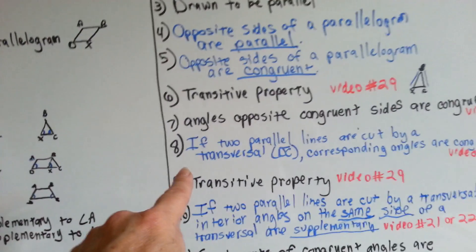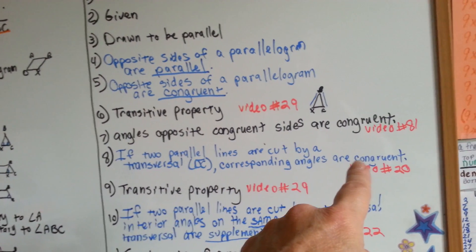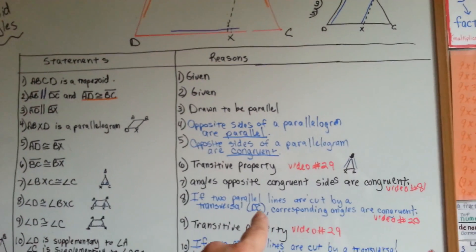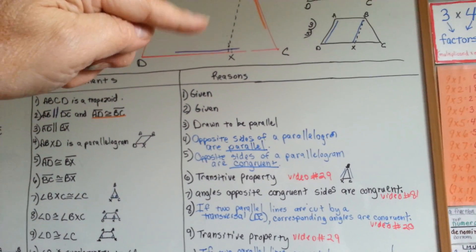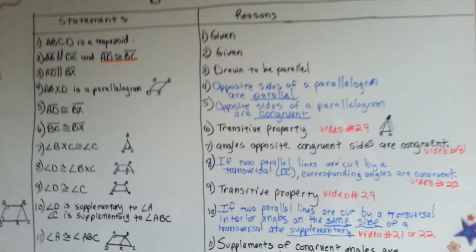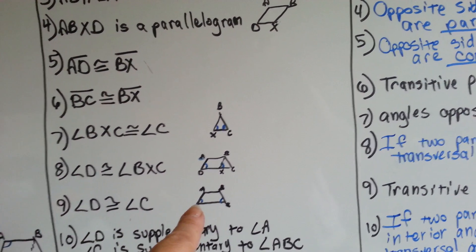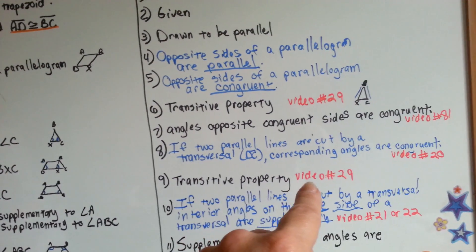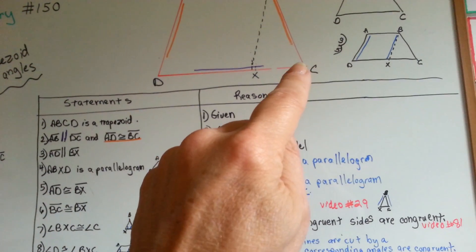If two parallel lines are cut by a transversal DC, corresponding angles are congruent — that's in video number 20 of my geometry series. Number 9: angle D is congruent to angle C. Angle D in this bottom corner is congruent to angle C. The reasoning is the transitive property again, from video number 29. This angle is congruent to that angle because of the transitive property.